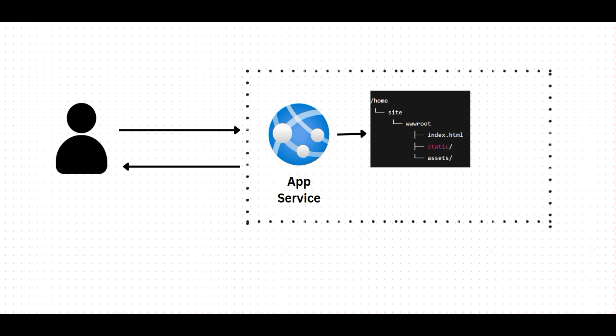All of this is tied and managed through something called the App Service Plan, which defines the underlying resources such as the pricing tier, compute power, scaling rules, and regions.